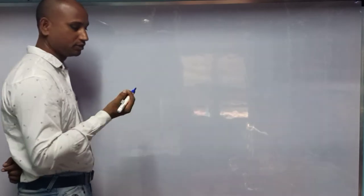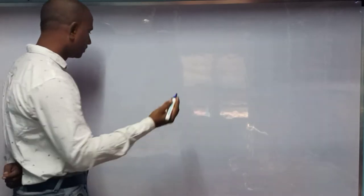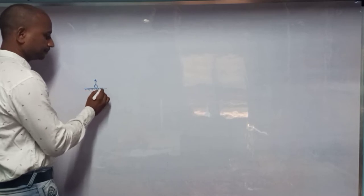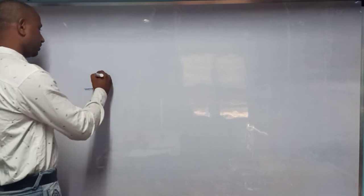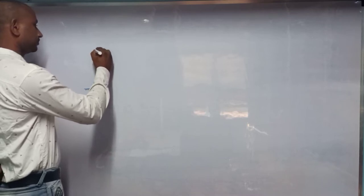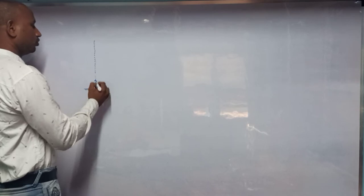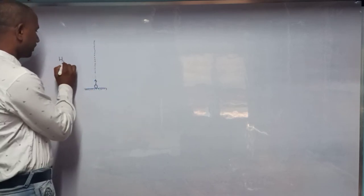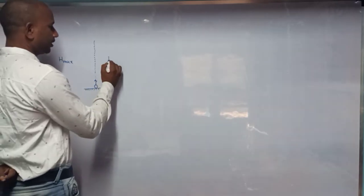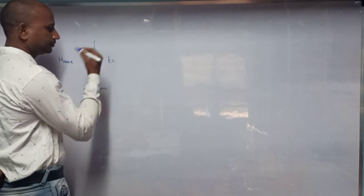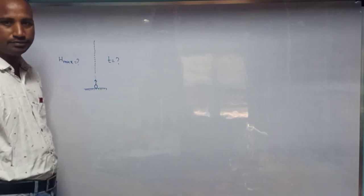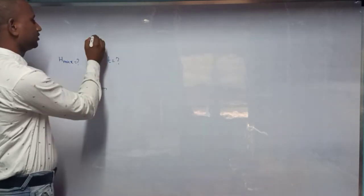We already discussed motion under gravity. In motion under gravity, one small logical point we can identify: a body projected in the vertically upward direction follows a straight line path. The body will reach a maximum height, and we have to find out that maximum height H_max and the time taken by the body to reach maximum height. These two points are very important in motion under gravity.